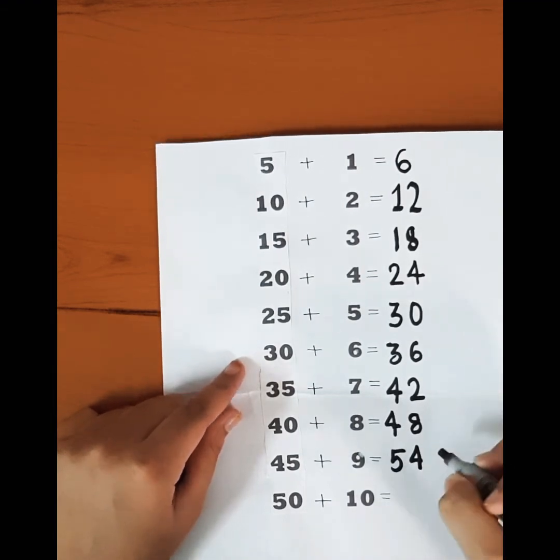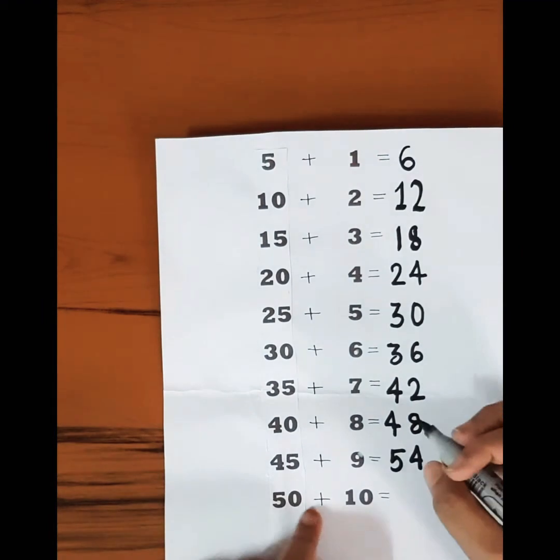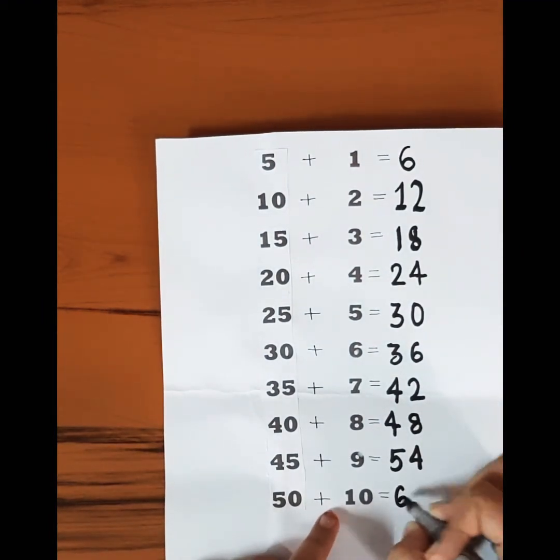And then the last one is fifty plus ten is equal to sixty. So you got the answers.